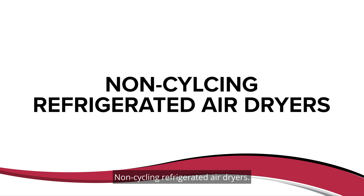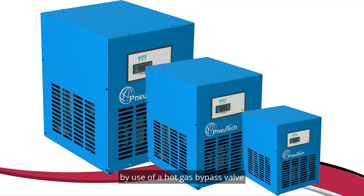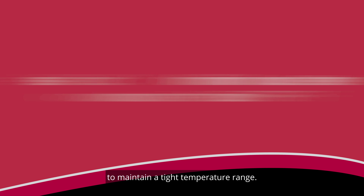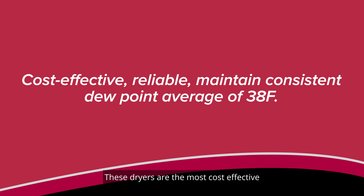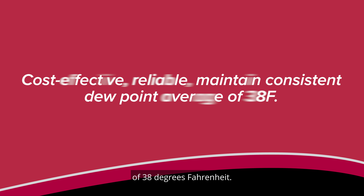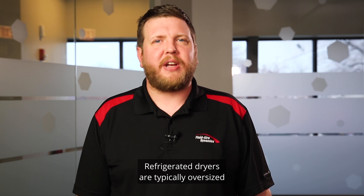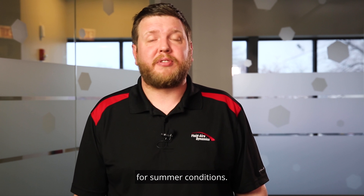Non-cycling refrigerated air dryers allow the refrigeration circuit to run continually. They control their temperature by use of a hot gas bypass valve and cycling of the evaporator fan to maintain a tight temperature range. These dryers are the most cost effective and are typically very reliable, maintaining a fairly consistent dew point average of 38 degrees Fahrenheit. Correction factors can be found on the dryer literature, allowing you to adjust the dryer size for your specific conditions. Refrigerated dryers are typically oversized for summer conditions.